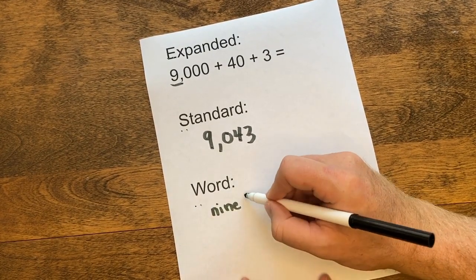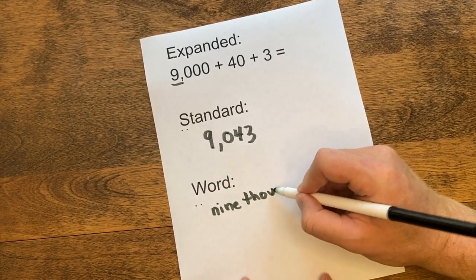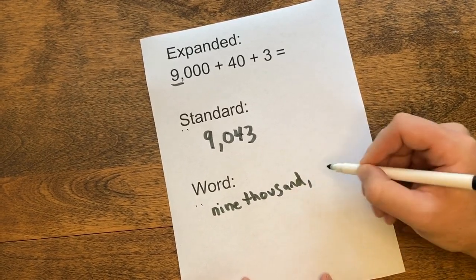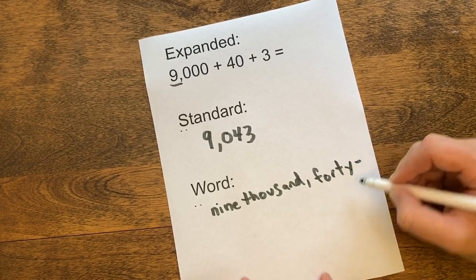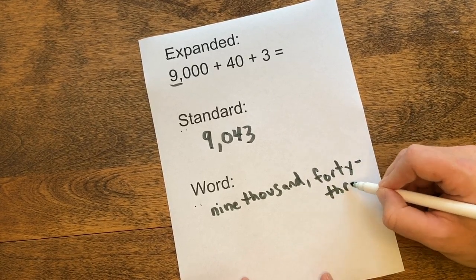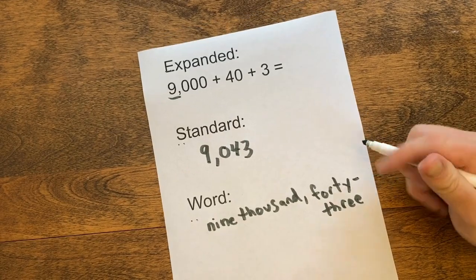We're going to use that to write out our word form. 9,000. Again, I'm going to put a comma, just like there's a comma in the standard form number. 43. And we're done. Good luck.